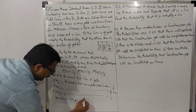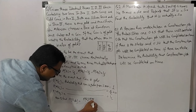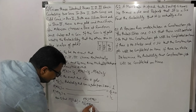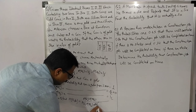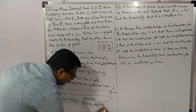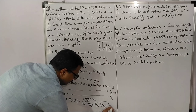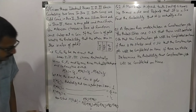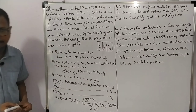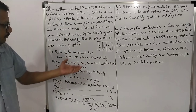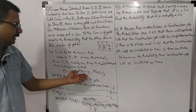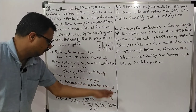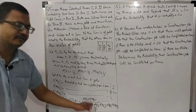Now applying Bayes' formula: P(E1|A) = [P(E1) · P(A|E1)] / [P(E1)·P(A|E1) + P(E2)·P(A|E2) + P(E3)·P(A|E3)]. Substituting values — P(A|E1)=1, P(A|E2)=0, P(A|E3)=1/2 — the answer is 2/3.